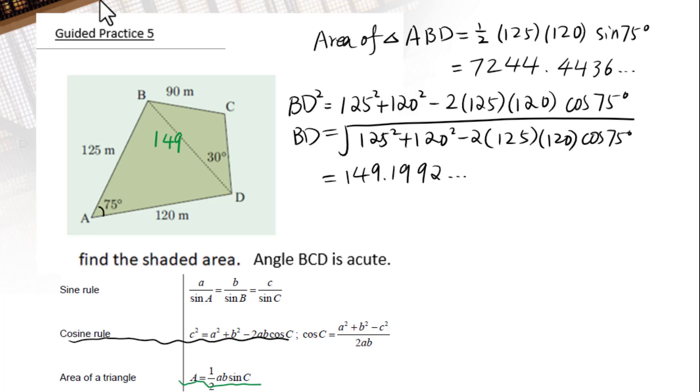30 degree angle is not included angle. We will use the sine law to figure out angle C. 149 over sine C equals 90 over sine 30 degree cross multiply. 90 times sine C equals 149 sine 30 degree. Sine C equals divided by 90 both sides, 149 sine 30 over 90.